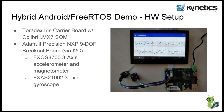The setup uses the Toradex IRIS carrier board with the Colibri iMX7 SoM. We use the NXP FXOS8700 sensor — a very high precision sensor — and also the FXAS21002 gyroscope. These are NXP sensors that have been used extensively. Unfortunately they are currently out of stock, but they are very precise and capable sensors.